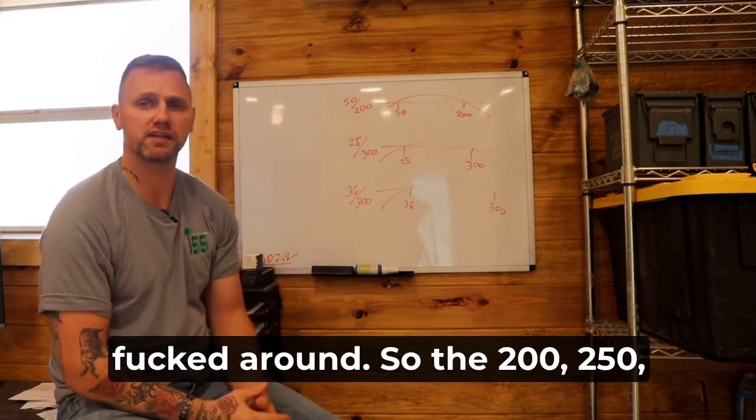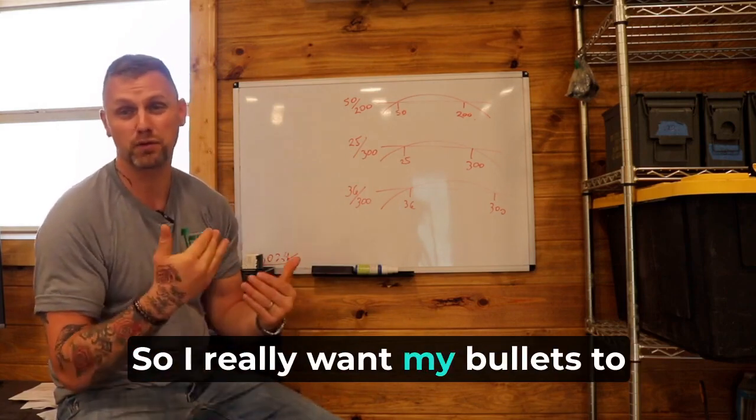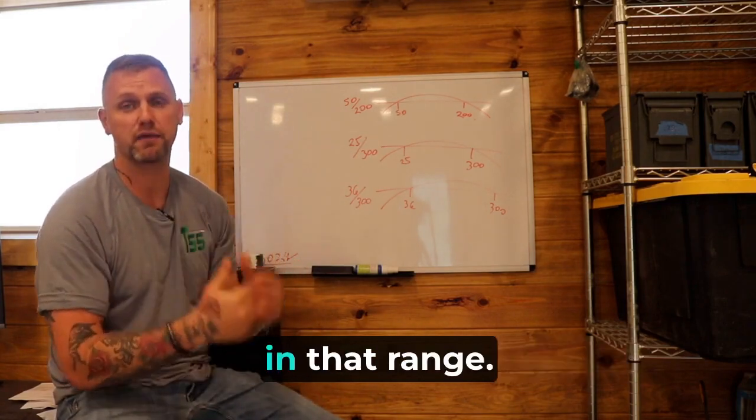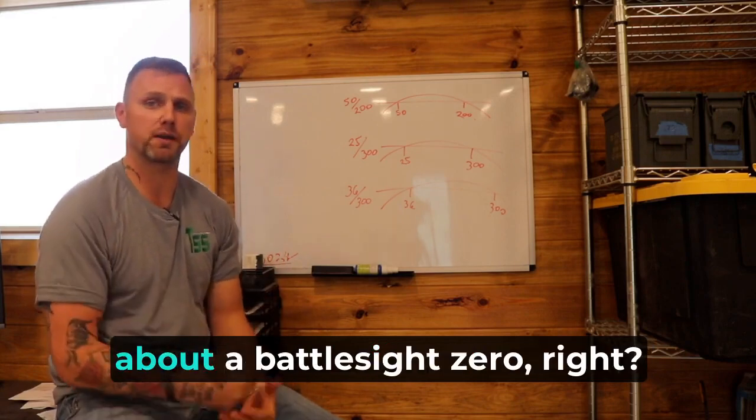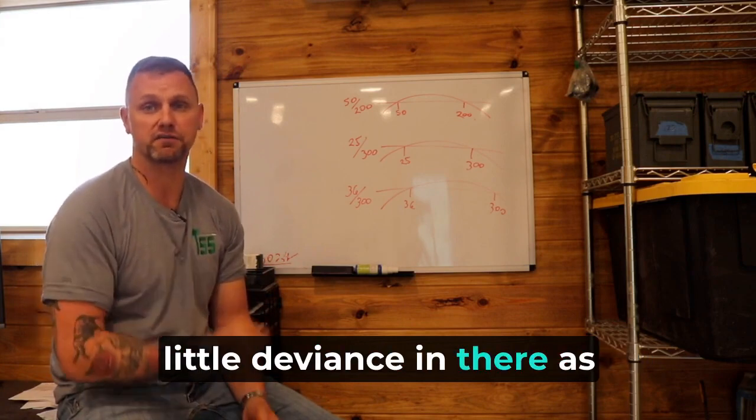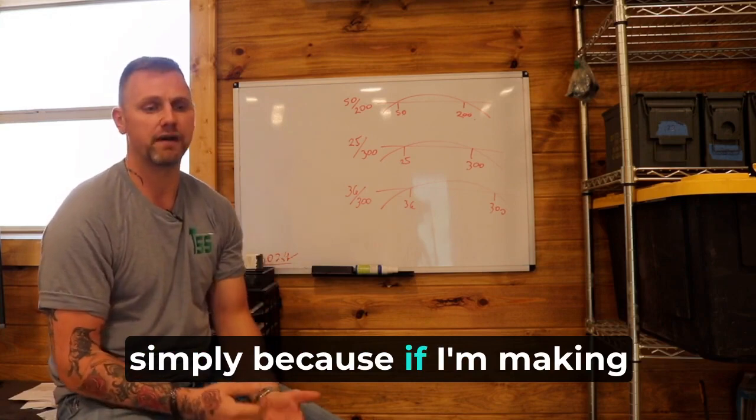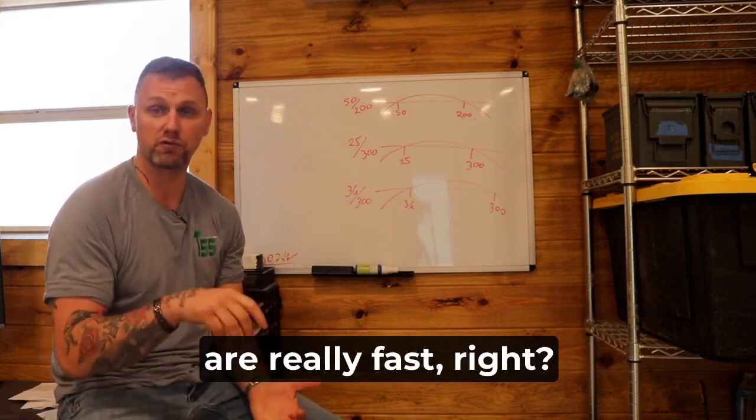So the 200 meters, 250, it's about the maximum that we want. So I really want my bullets to be the most accurate in that range. The other thing is when we talk about a battle sight zero, right, battle sight zero. So I want my bullet to have as little deviance in there as possible in that battle sight zero, simply because if I'm making close quarter shots that are really fast.